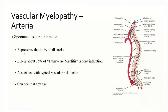Setting surgery aside, spontaneous cord infarction represents about 1% of all stroke. Retrospective series show that about 15% of patients diagnosed with transverse myelitis actually have cord infarction. A lot of the time it's associated with typical vascular risk factors: hypertension, diabetes, atherosclerosis, hyperlipidemia, obesity — but it can occur at any age, from children to the elderly.